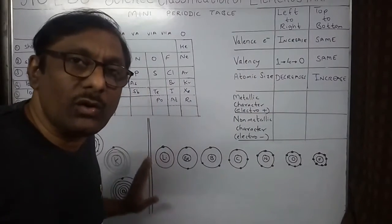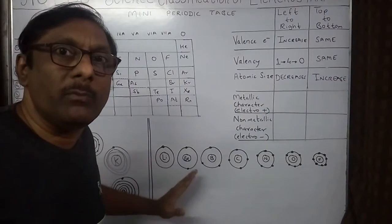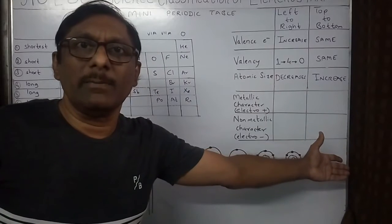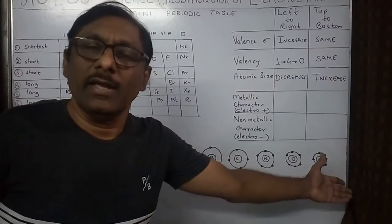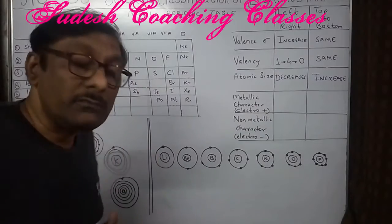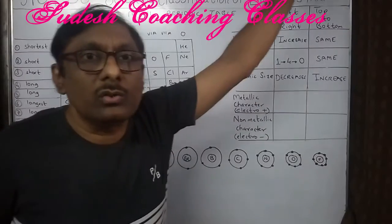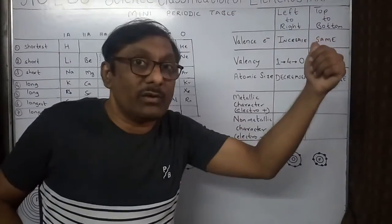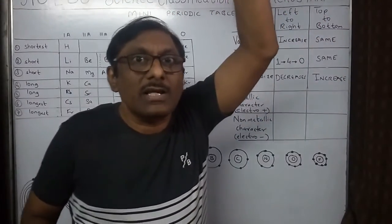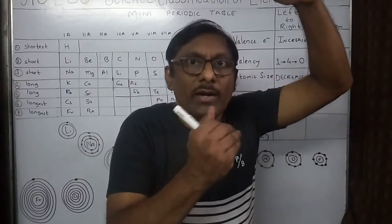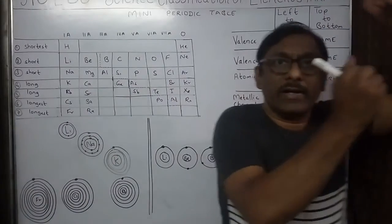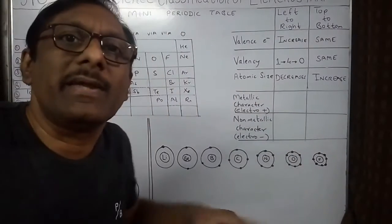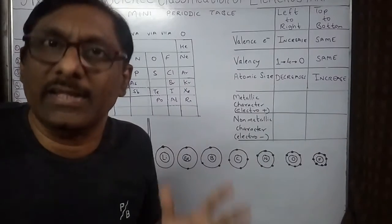As we go from left to right, look at the electrons. Lithium ka electron bohat door hai — the electron is very far from the nucleus. But as we go from left to right, electrons come closer to the nucleus, attraction increases. Lithium can give its one electron very easily, but beryllium with two electrons gives them a little less easily than lithium. Lithium gives its electrons and becomes positive — that is its electropositivity.